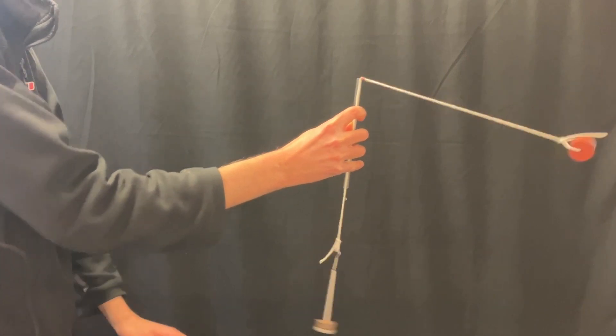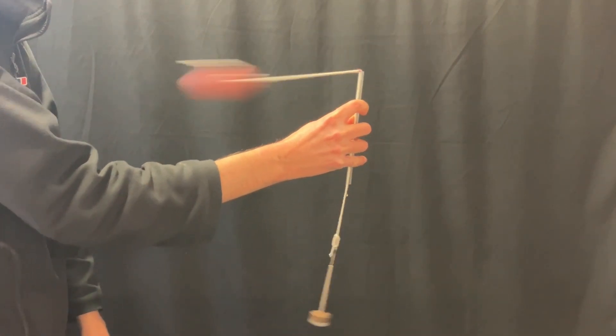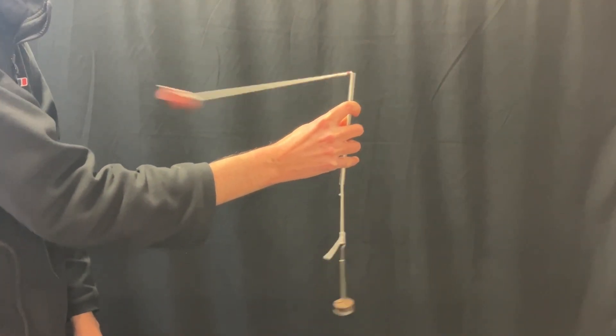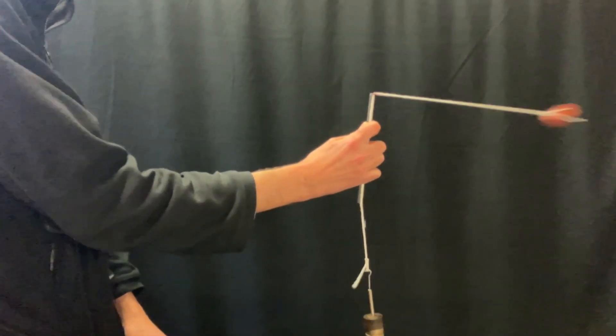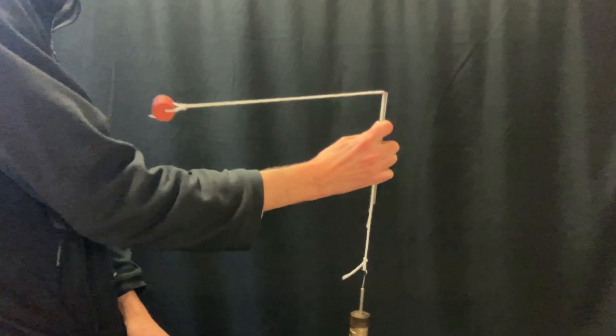For each amount of mass hanging on the end, once you've got it stable, you'll need to measure the time for 10 time periods. In order to do that, you'll need to start counting from zero. Let's use the slow motion footage to illustrate this.